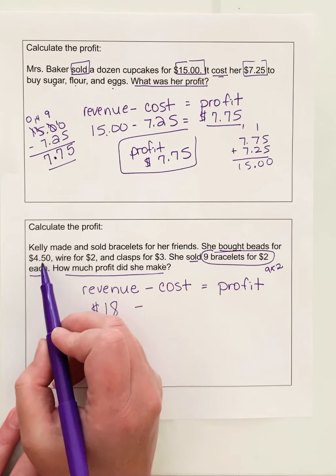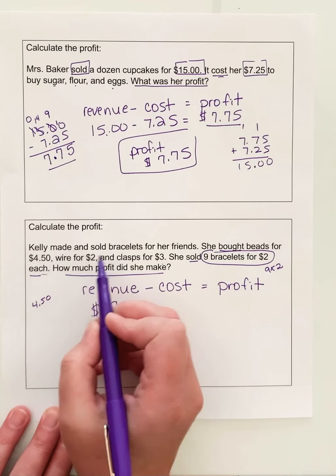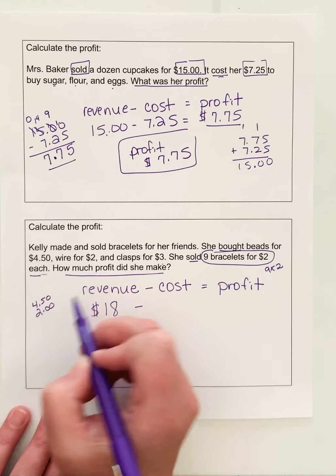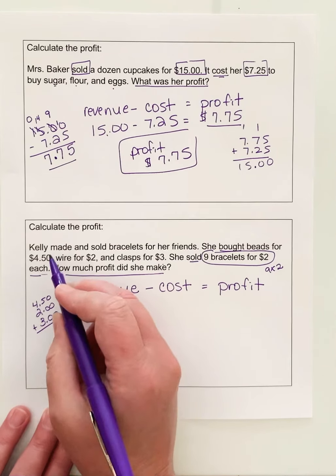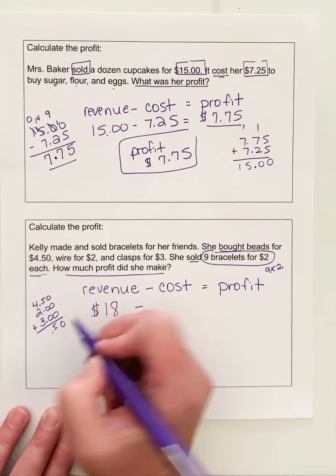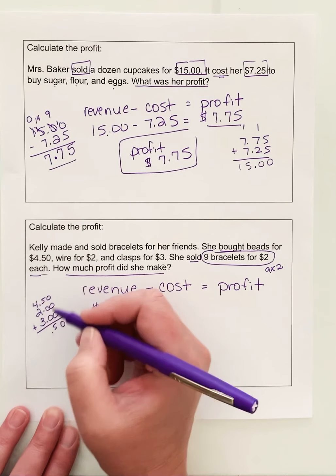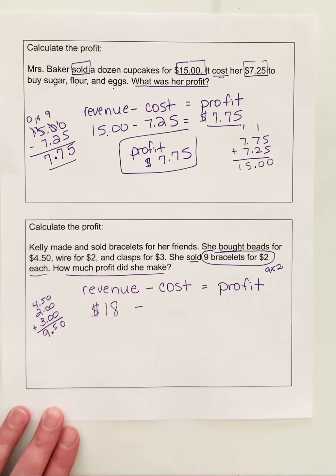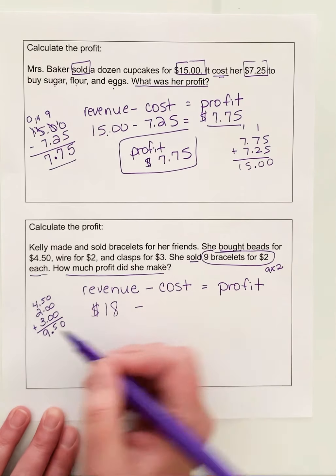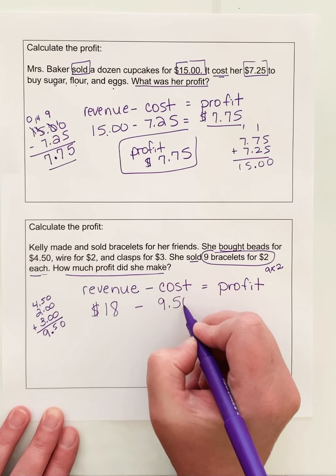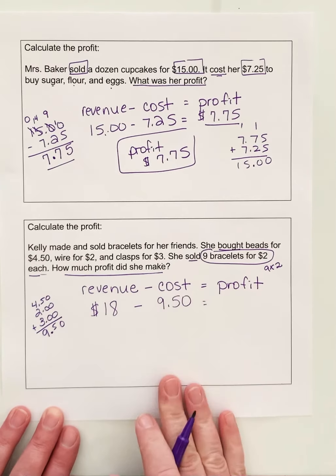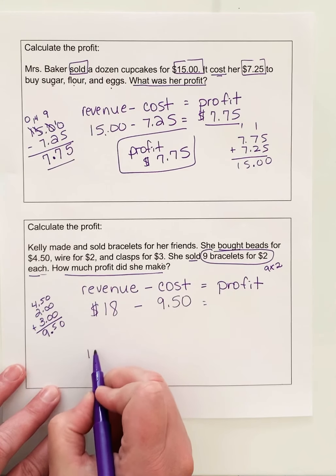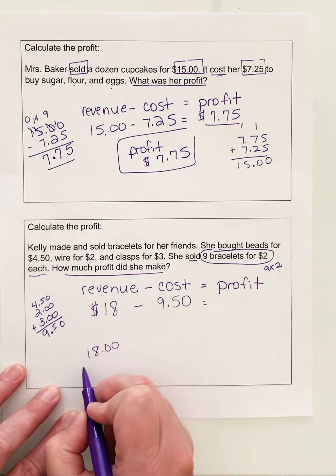She bought beads for $4.50, wire for $2, and clasps for $3. So let's add those up and see what her total amount of her costs is. Looks like $9.50. So the cost to make the bracelets was $9.50. I have to subtract that out of my revenue to get my total profit. So I'm going to come down here, do some math.